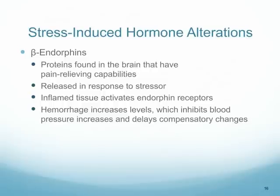Beta endorphins are proteins found in the brain that have pain-relieving capabilities. When we have an initial stressor, they are released to help decrease the amount of pain we're feeling at that time. For example, if you break an arm, endorphins are released so the pain is not as severe — so that if you're being chased by a lion and need to fight or flee, you can do so rather than focusing on the pain. However, the endorphin effect will decrease over time, and then the pain will start to become more severe.